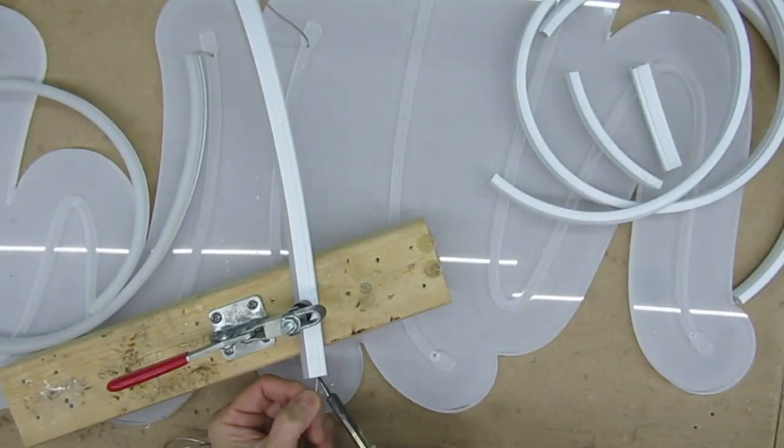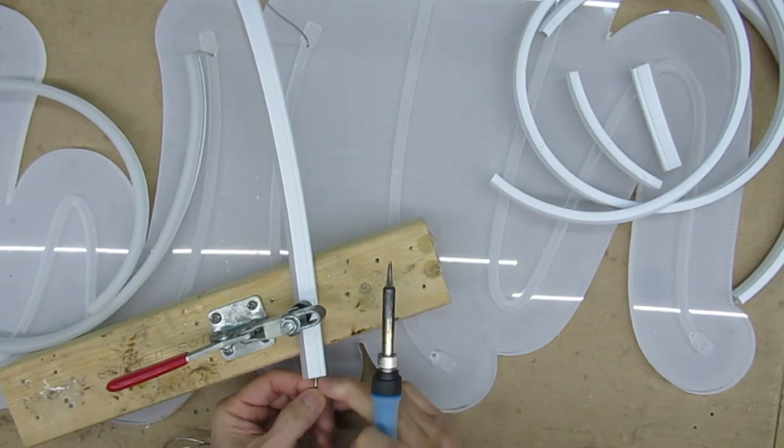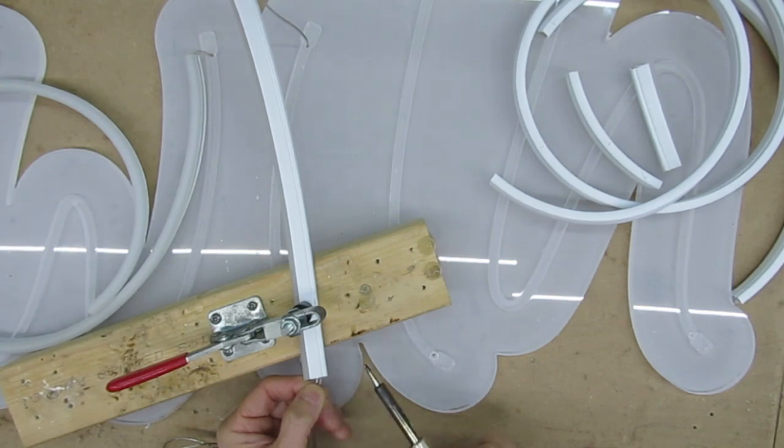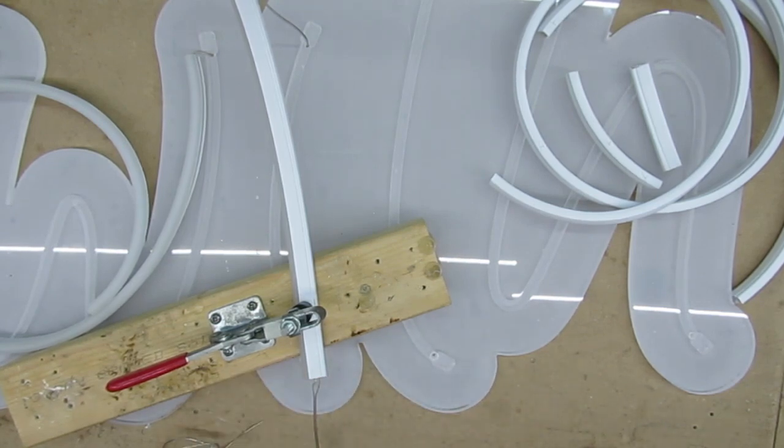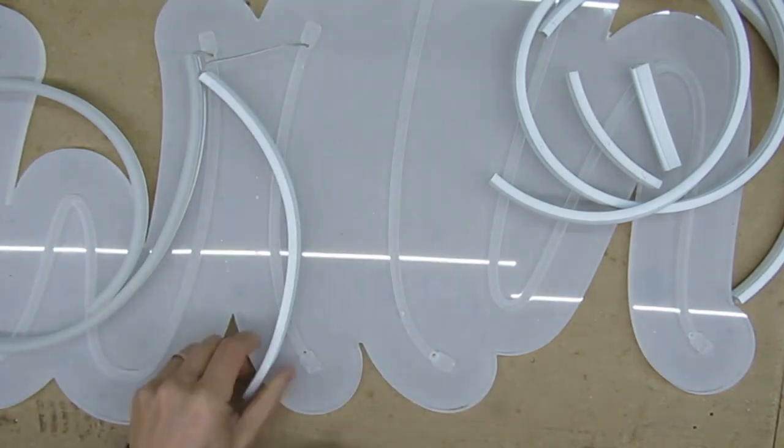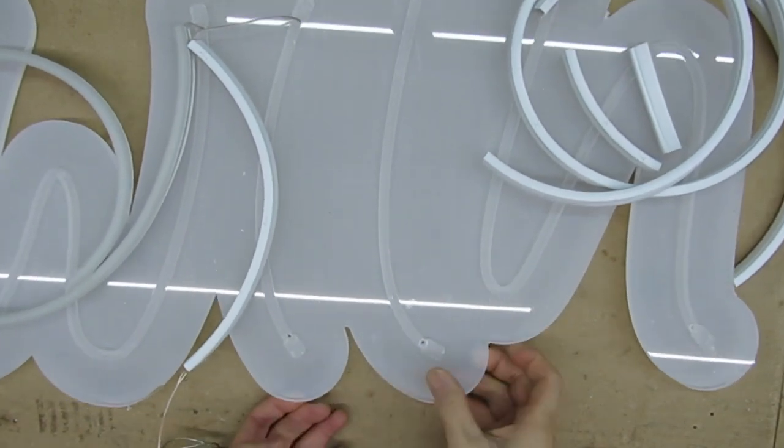Now we will begin soldering the cable to each piece of neon flex. It is quite a fiddly task but not difficult. All you need is time and patience, and small fingers. After soldering the cable onto a length of neon flex, feed the cable through the pre-drilled hole, make sure the cable is long enough to reach the next piece.